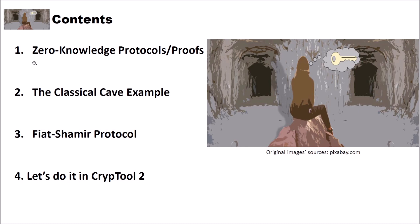In the first part, you will learn what a zero-knowledge protocol or proof is. Then we will have a look at the classical cave example, which explains how zero-knowledge protocols and proofs work. After that, we will have a look at the Fiat-Shamir protocol. And finally, we will do it in CrypTool 2, where we have a really nice simulation of a zero-knowledge protocol.